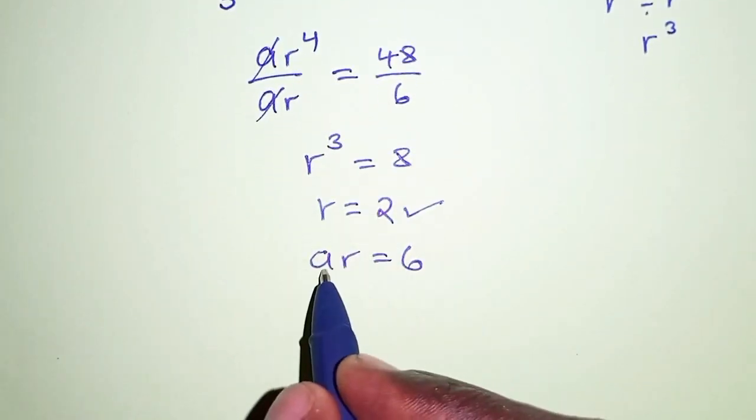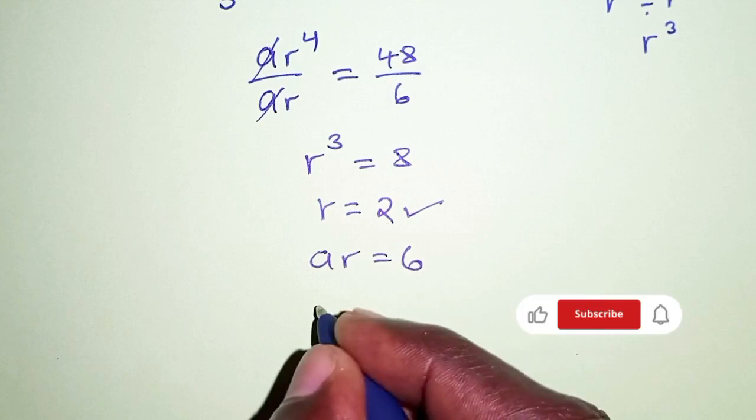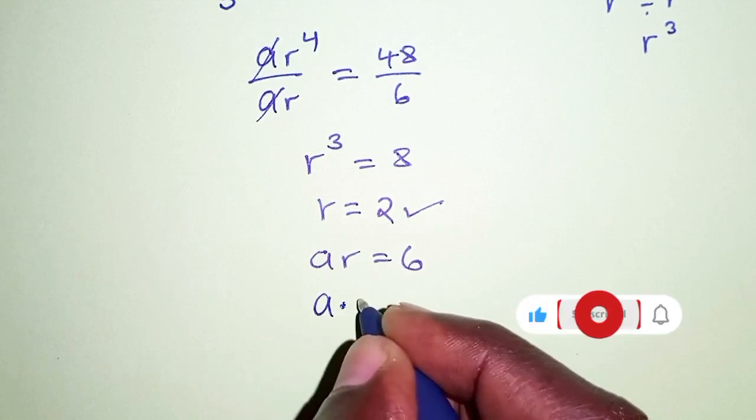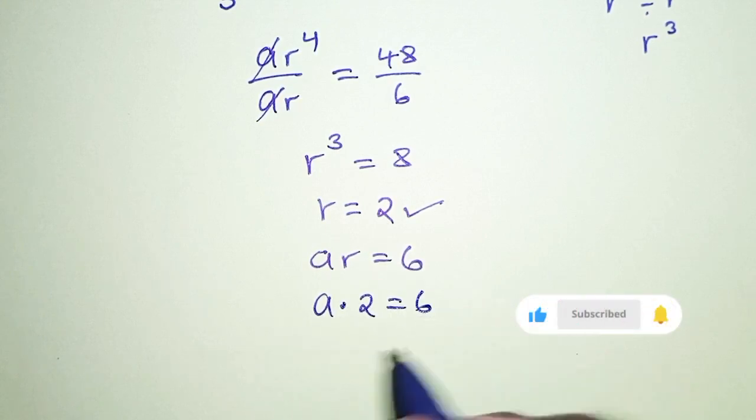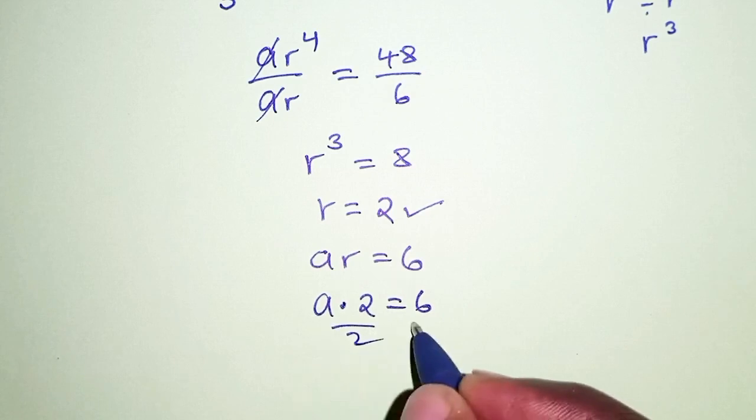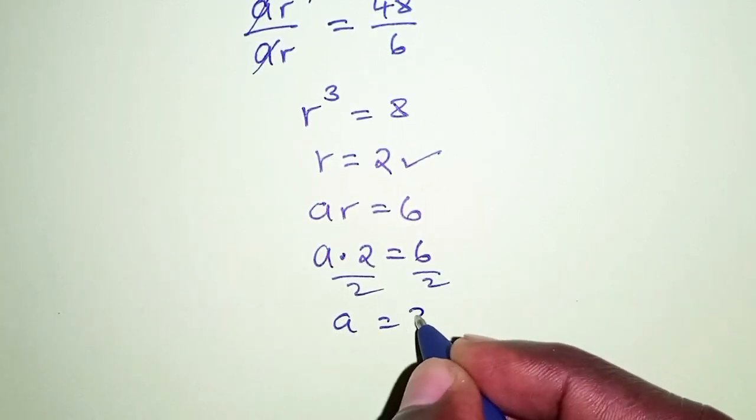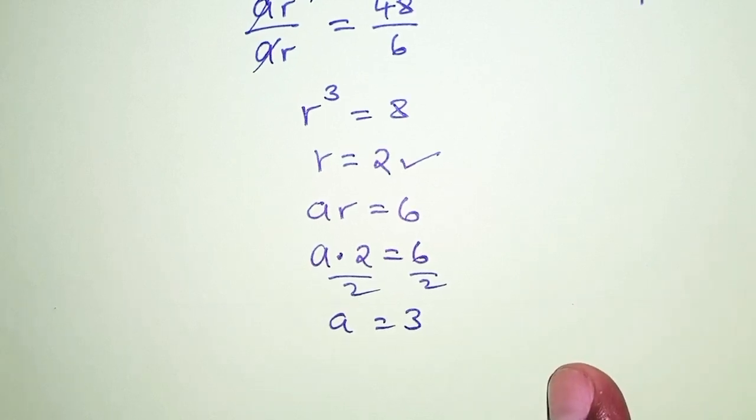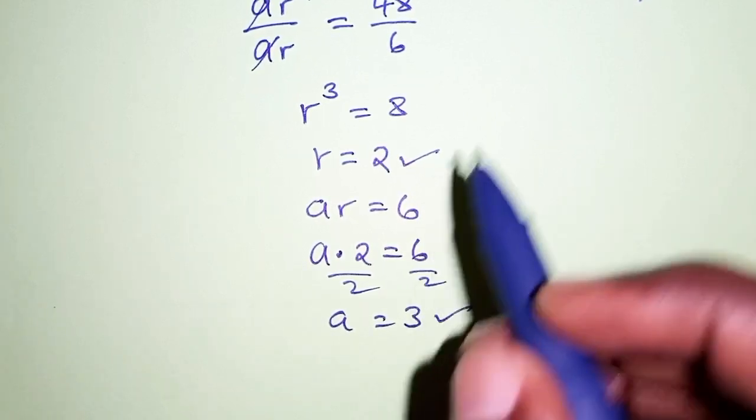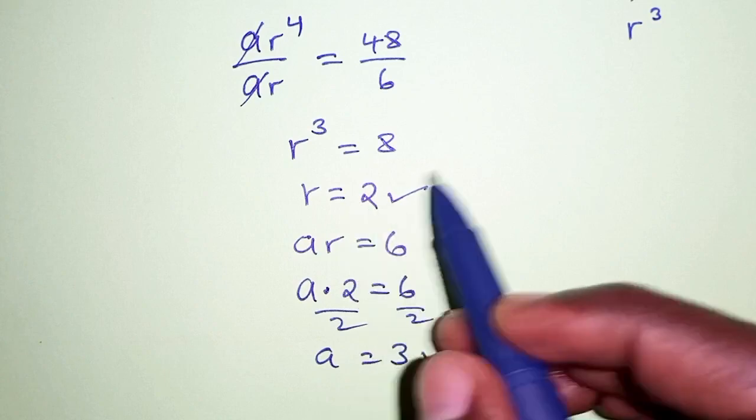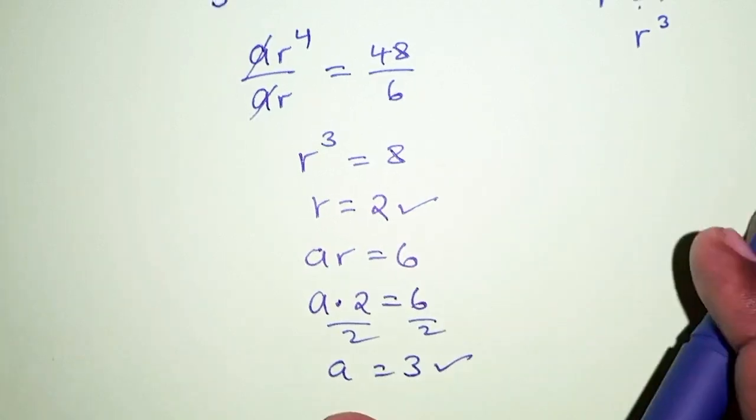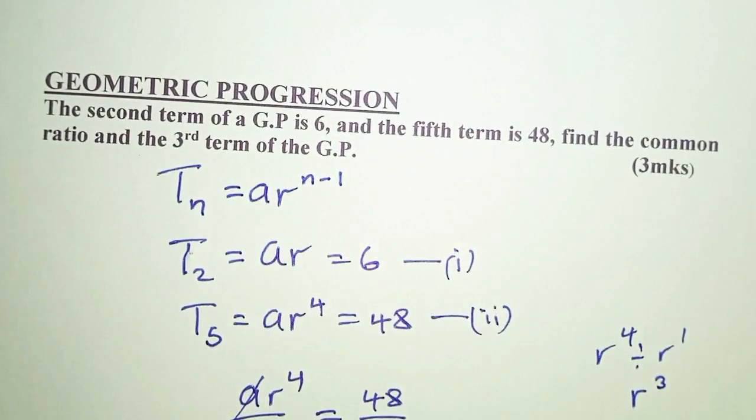So let's use equation 1. We know r as 2, so we are going to say a times 2 is equal to 6. And dividing both sides by 2, the first term a becomes 3. So remember we already have the common ratio as required in the equation, and the next thing which is also required in the equation is the third term of the GP.